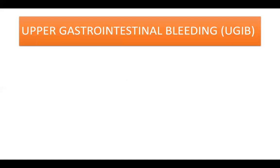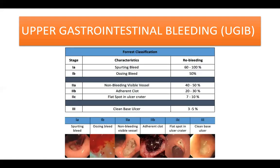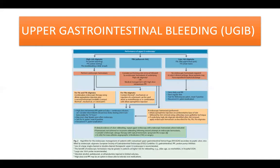In upper gastrointestinal bleeding, peptic ulcers are the most common cause. Features of an ulcer at endoscopy provide important prognostic information that guides subsequent management decisions. An endoscopy classification for ulcers is used to assess risk of re-bleeding and management decisions. This classification is called the Forrest classification, as shown on this table. This flowchart shows the recommended approach depending on the Forrest classification.